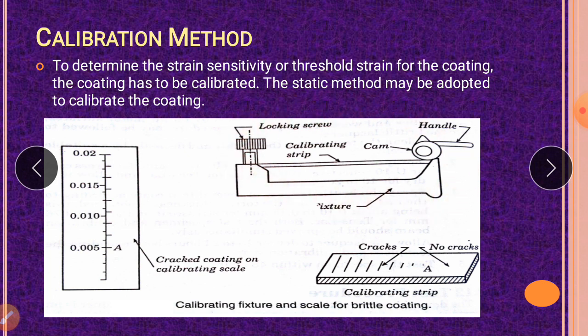In this diagram you can see here, for calibration of the stress coating, a cantilever calibrating strip is used. You can see here we are using one strip which is a calibrating strip. It is cantilever, so one side is fixed, one side is free. It is shown on the handle but it is not fixed there. Only one side is fixed. The calibrating strip consists of a bar of aluminum 300 mm long, 2.54 mm wide, and 6 mm thick.